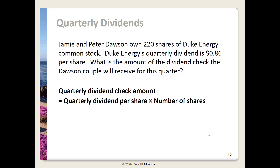In this video I'll be going over some typical calculations as they relate to investing in stocks. Here we're going to be working with quarterly dividends. Jamie and Peter Dawson own 220 shares of Duke Energy common stock. Duke Energy's quarterly dividend is 86 cents per share. What is the amount of the dividend check the Dawson couple will receive for this quarter?